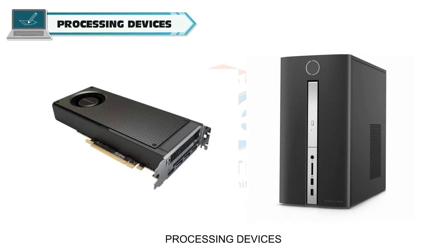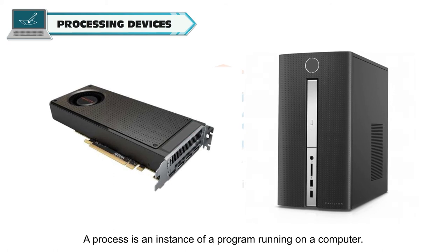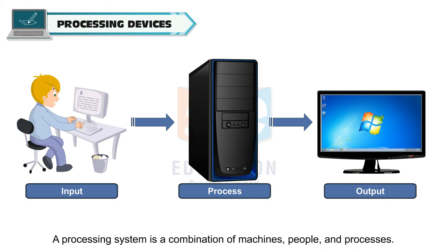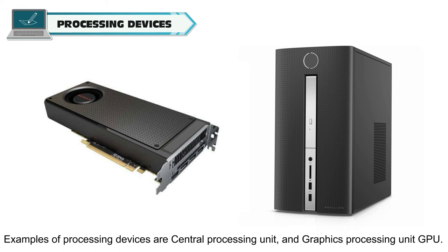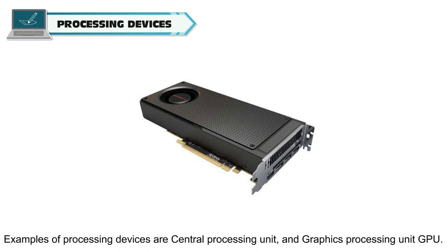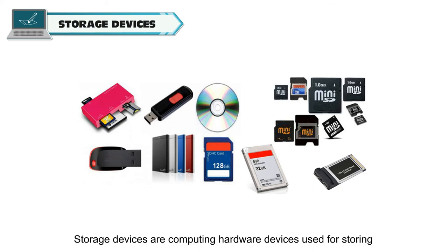Processing devices. A process is an instance of a program running on a computer. A processing system is a combination of machine, people and processes. It is the transformation of a set of inputs into meaningful outputs. Examples of processing devices are Central Processing Unit and Graphics Processing Unit or GPU.